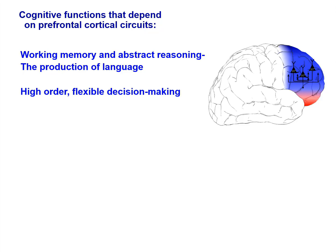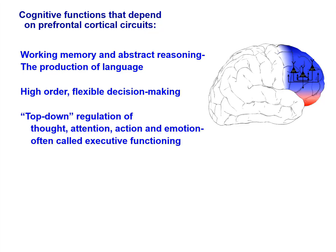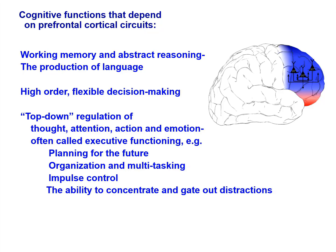These abilities also allow us high-order, flexible decision-making, where decisions can be based on stored information or projections about the future, and can be rapidly altered based on a changing environment. The prefrontal cortex provides top-down regulation of thought, attention, actions, and emotions — something we often call executive functioning. Examples of executive functions include planning for the future, organizing and multitasking, impulse control, and the ability to concentrate and gate out distractions.